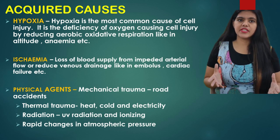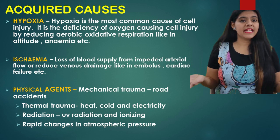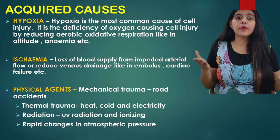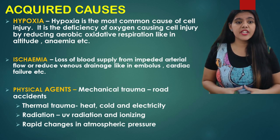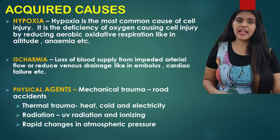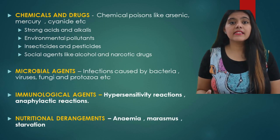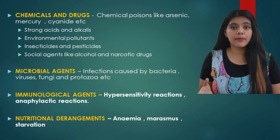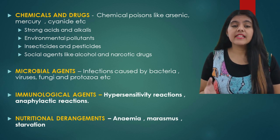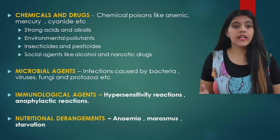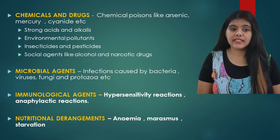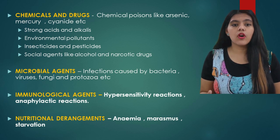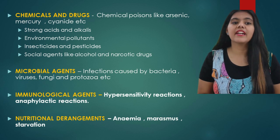Physical agents include mechanical trauma, thermal trauma such as heat and cold, electricity, radiation like UV radiation, and rapid changes in atmospheric pressure. Another acquired cause is chemicals and drugs — chemical poisons like arsenic, mercury, and cyanide poisoning; environmental pollutants; strong acids and alkalis; insecticides and pesticides; and social agents like alcohol, narcotics, and drugs.